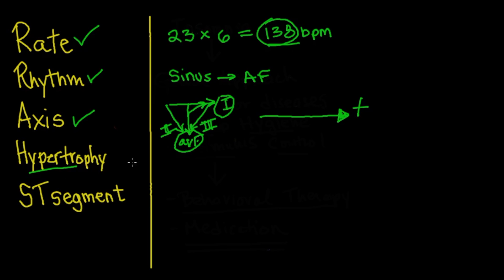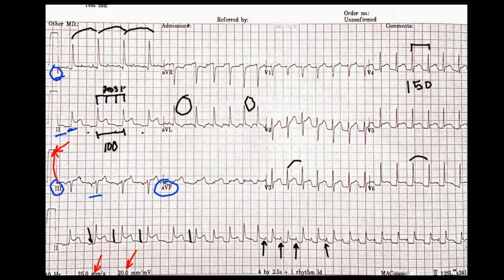Let's look for hypertrophy — it's tricky. There are four chambers: right atrium, left atrium, right ventricle, and left ventricle. For right atrial enlargement, we look for peaked P waves in lead II — we don't see that. In V1, we look for a large upward and small downward deflection — we don't see that either. For left atrial enlargement, we'd see a small positive and large negative P wave deflection — we don't see that. So no evidence of right or left atrial enlargement.